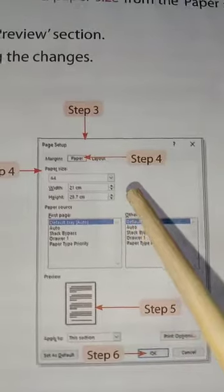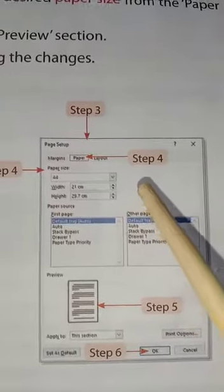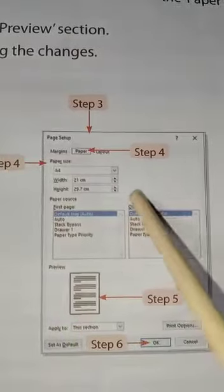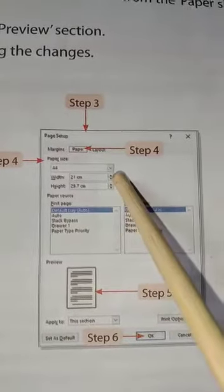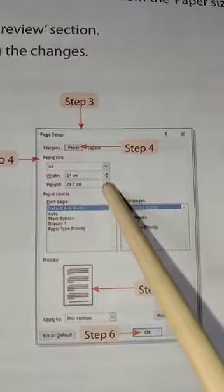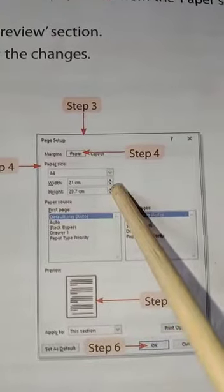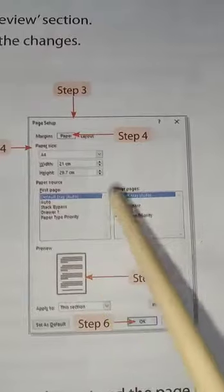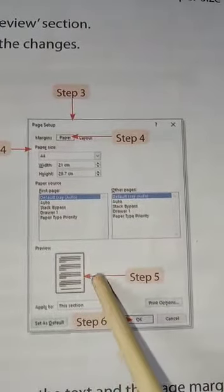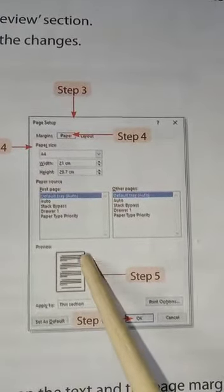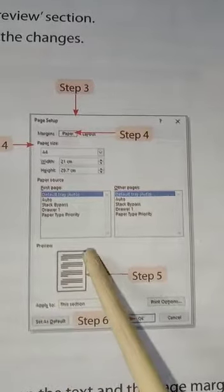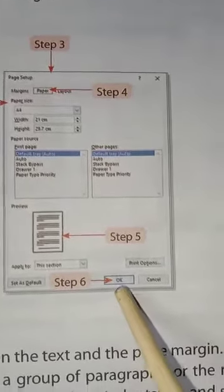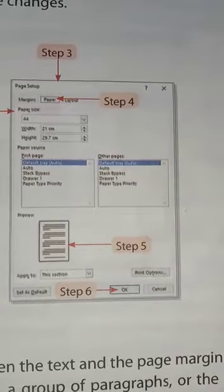Select the desired paper size from the Paper Size drop-down list. You can also use the arrows to increase or decrease the size. All changes you make will be displayed in the preview section. Click the OK button and observe the changes.